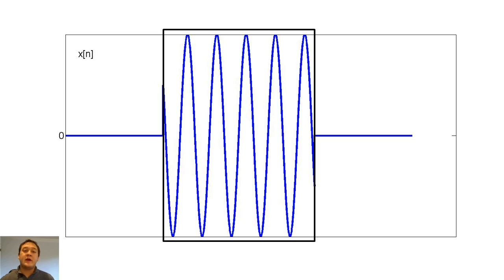So, if zero padding does not more accurately recover the two impulses of the cosine function, how can we more accurately recover those impulses? We must widen our window of x of n.